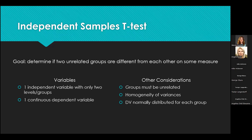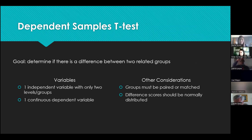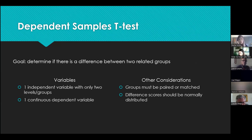In any t-test, we're testing for differences between groups. That's typically the first step when determining your test: decide if you're looking at differences or relationships. Then we have the dependent samples t-test — sometimes called paired samples or repeated measures t-test. The idea is that the two groups we're looking at are related. We're still looking to see if there are differences between those groups.